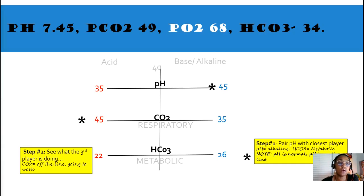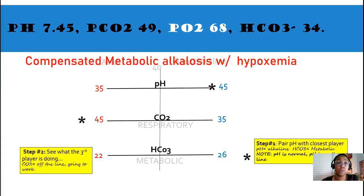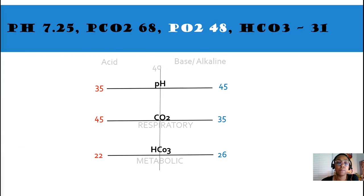And step number two, our CO2 is the third person out. It's off the line going to work on its way to compensation. And the pH is within normal. So, it is a compensated ABG. It's compensated metabolic alkalosis with hypoxemia.